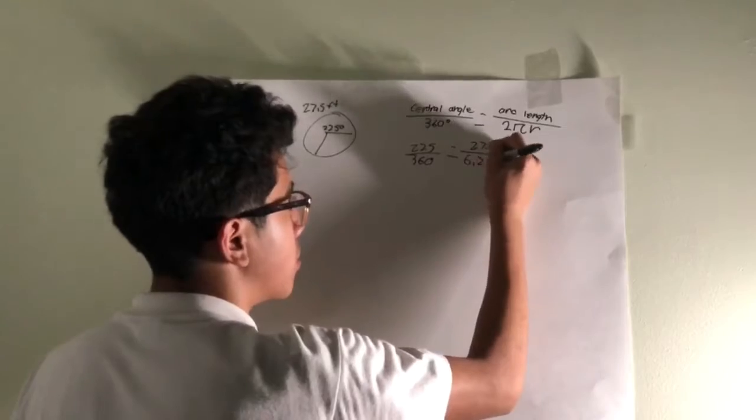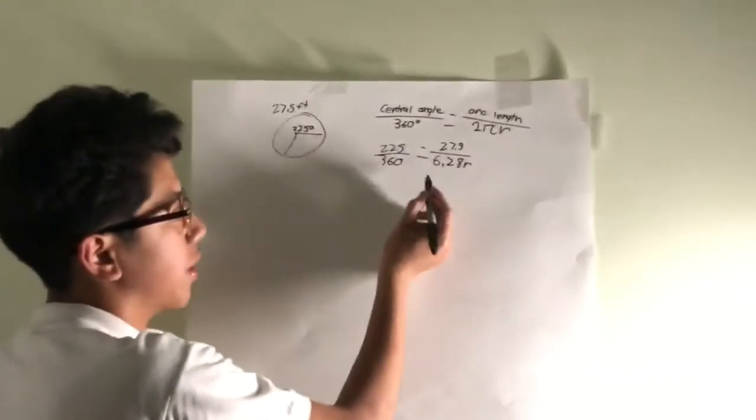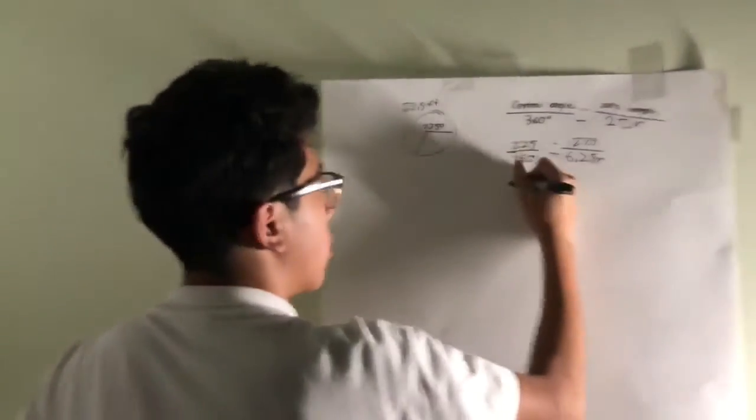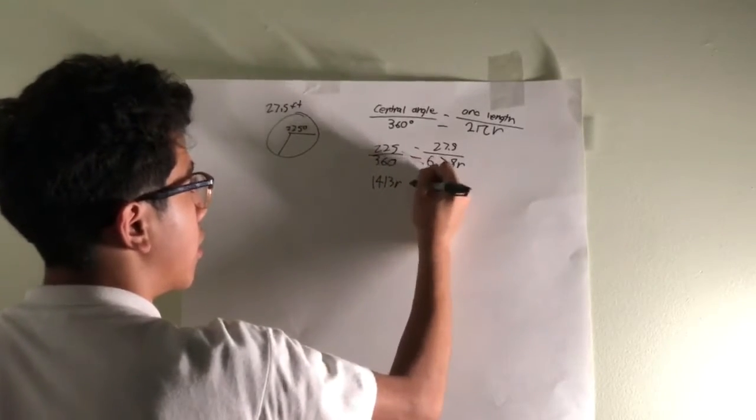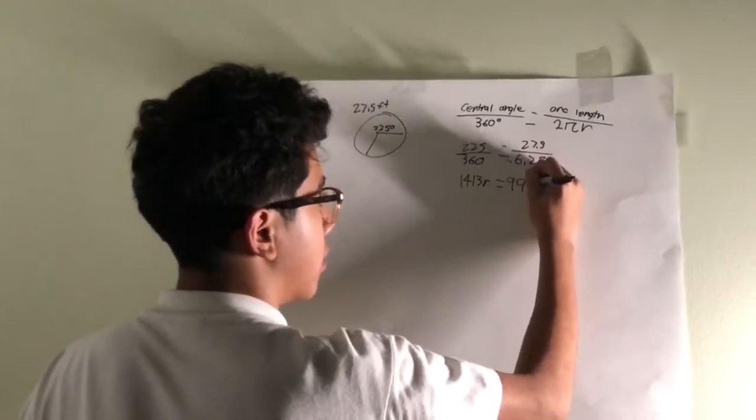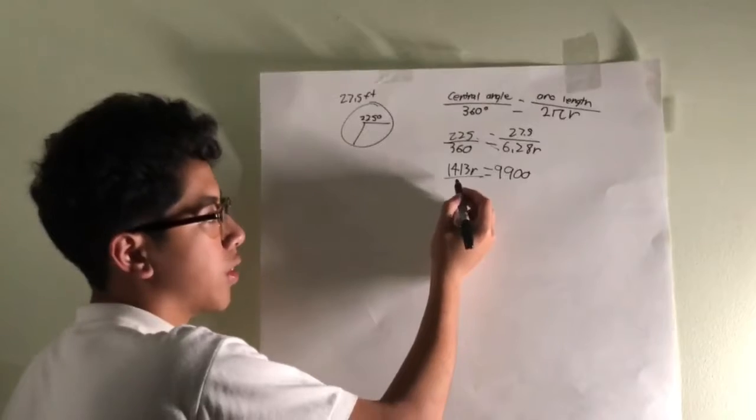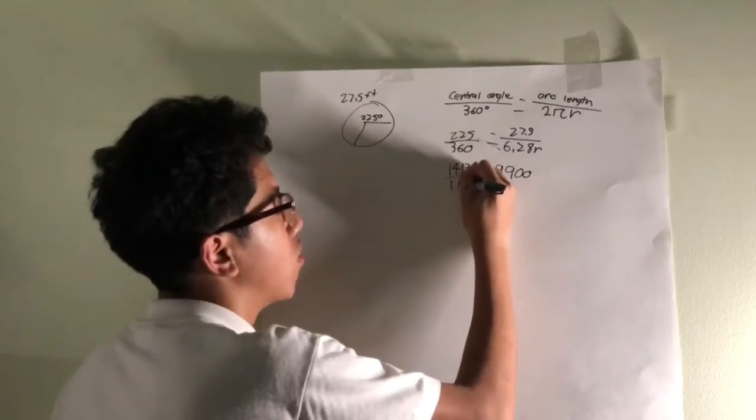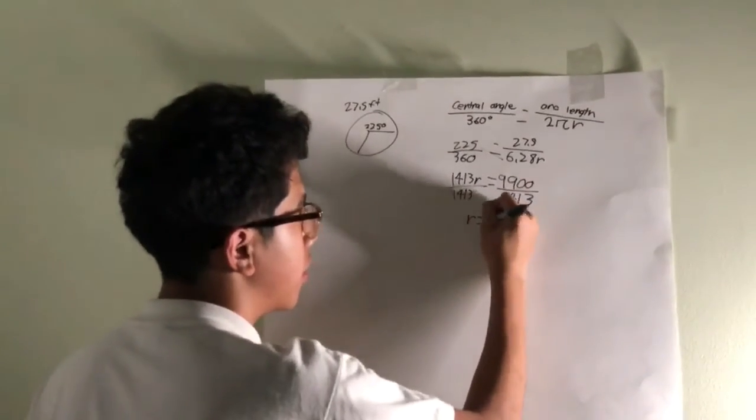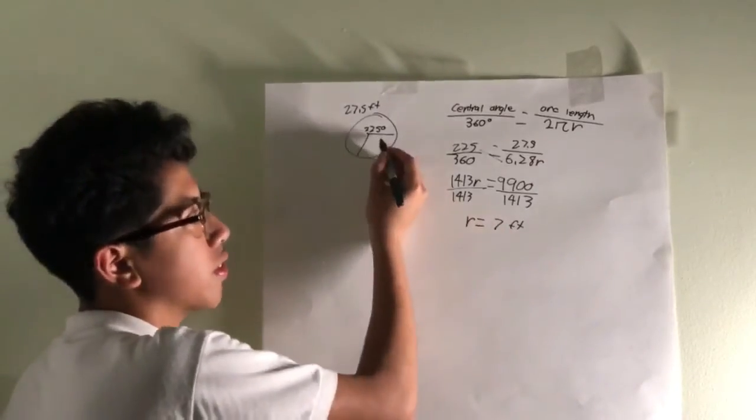So as we did for the same previous problems, we cross multiply. We multiply 225 by 6.28, but we leave the r. So that gives us 1,413 r equals 360 by 27.5, which gives us 9,900. So basically, what we do now is we divide 1,413 on both sides. Then it gives us, on the left side, r. And that leaves us with about 7 feet. Don't forget the units. And this is what represents the radius.